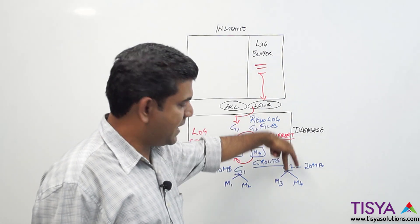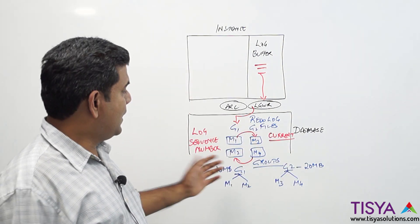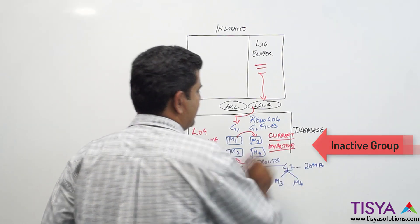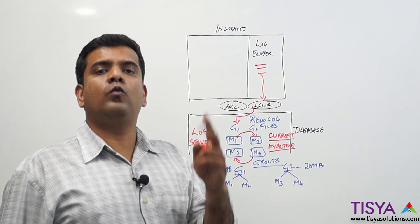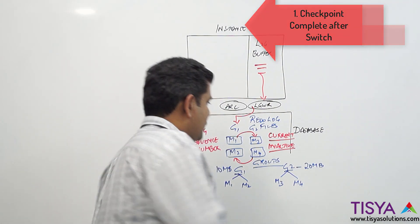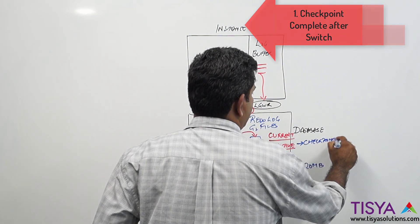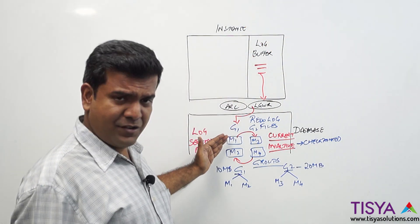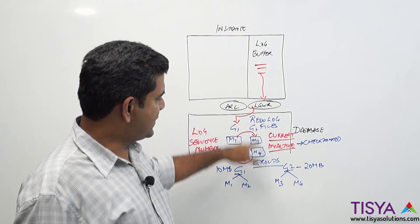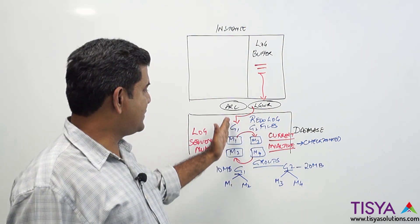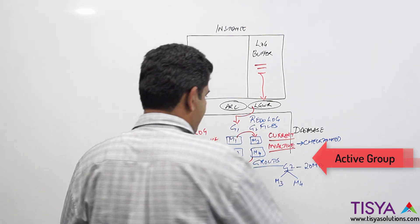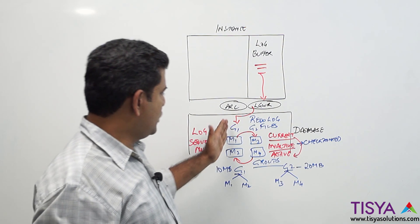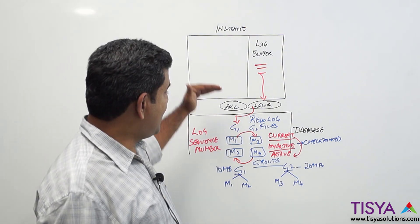The log writer writes to both members in the same group simultaneously. It will only overwrite a group when that group becomes inactive. There are two minimum requirements for a group to become inactive. When the log writer switches from group one to group two, group two becomes current while group one becomes active — that is the third state.